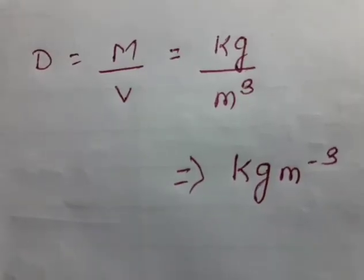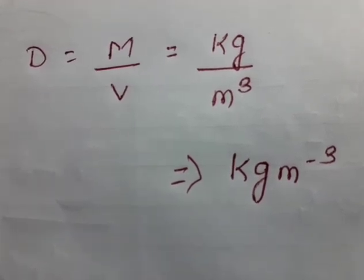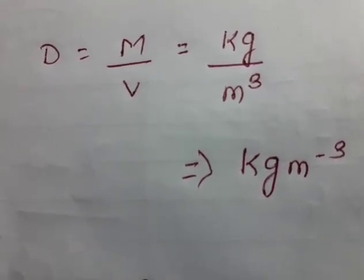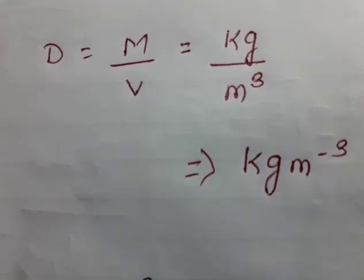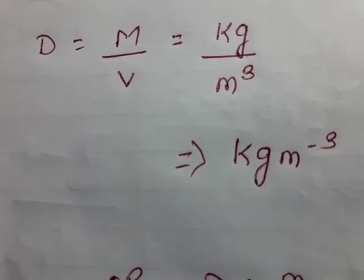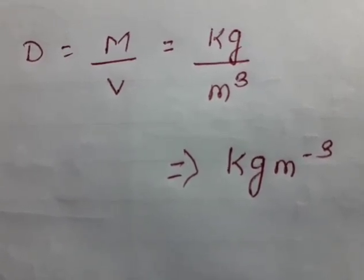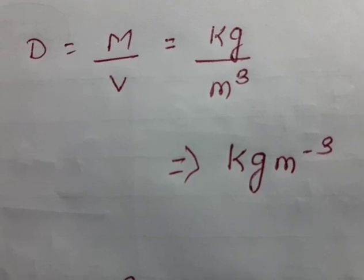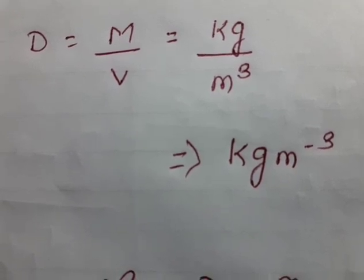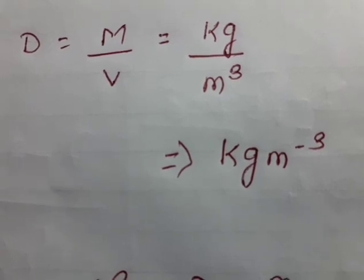Now I will tell you why the unit of density is kilogram per meter cube. As you can see on the screen, the density formula is mass by volume. The unit of mass is kilogram and volume is meter cube. According to the rule of indices, when the denominator goes to the numerator, the power becomes minus. Here the denominator is m³, so once it goes to the numerator it becomes kilogram m to the power minus 3.